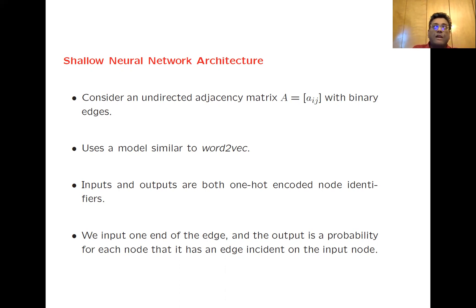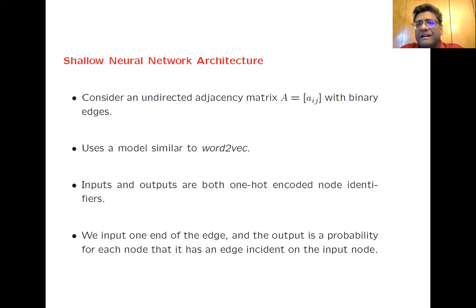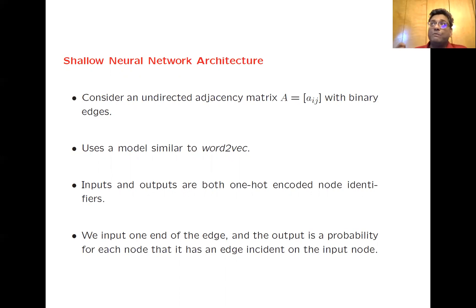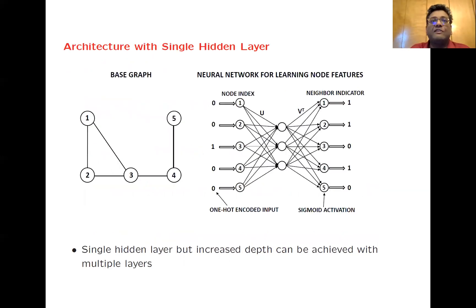This shallow neural network architecture uses a model borrowed from word2vec, which is used for creating word representations. The original paper was called node2vec because it derived much of its motivation from the word2vec paper. In this case, the inputs and outputs are both one-hot encoded node identifiers. You input a single one-hot encoded node, and your output is a probability — you have as many output nodes as the number of nodes. The output probability tells you whether a given output node is adjacent to your input node.